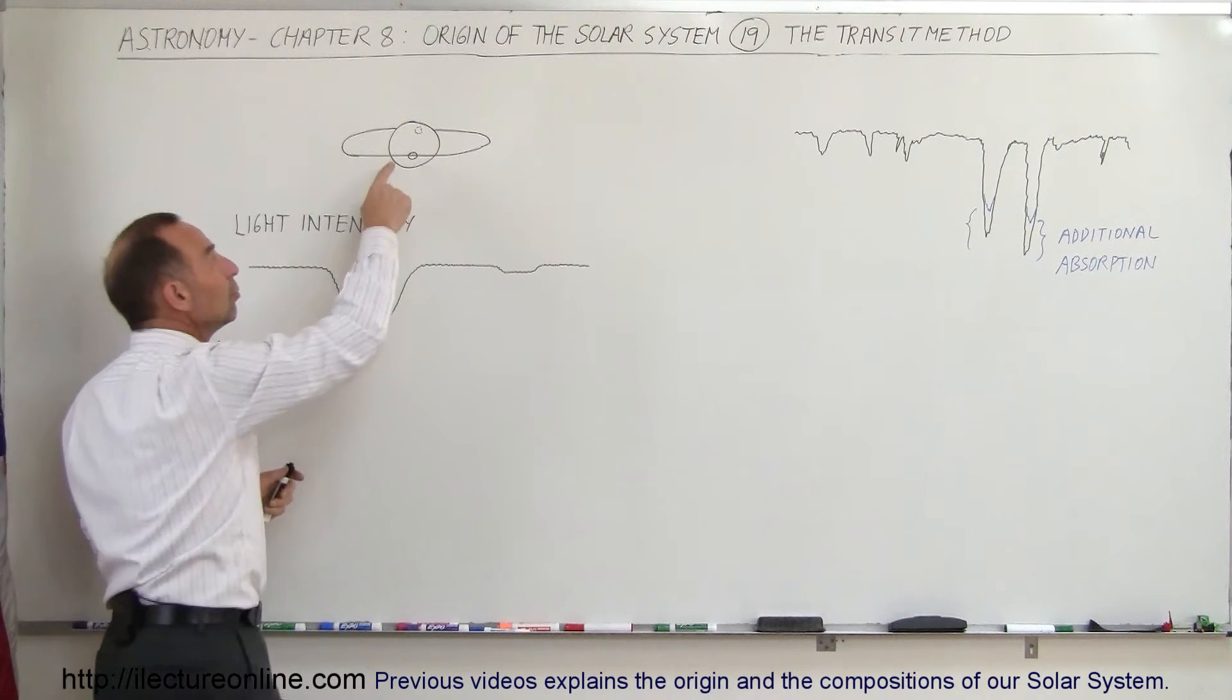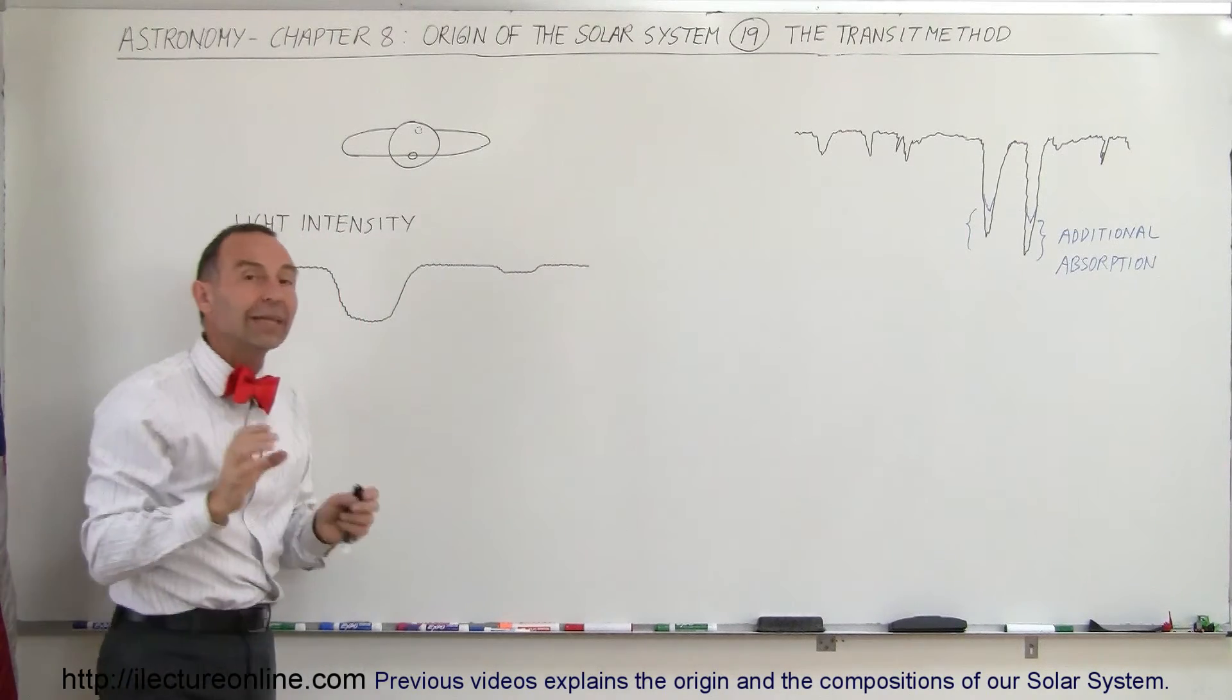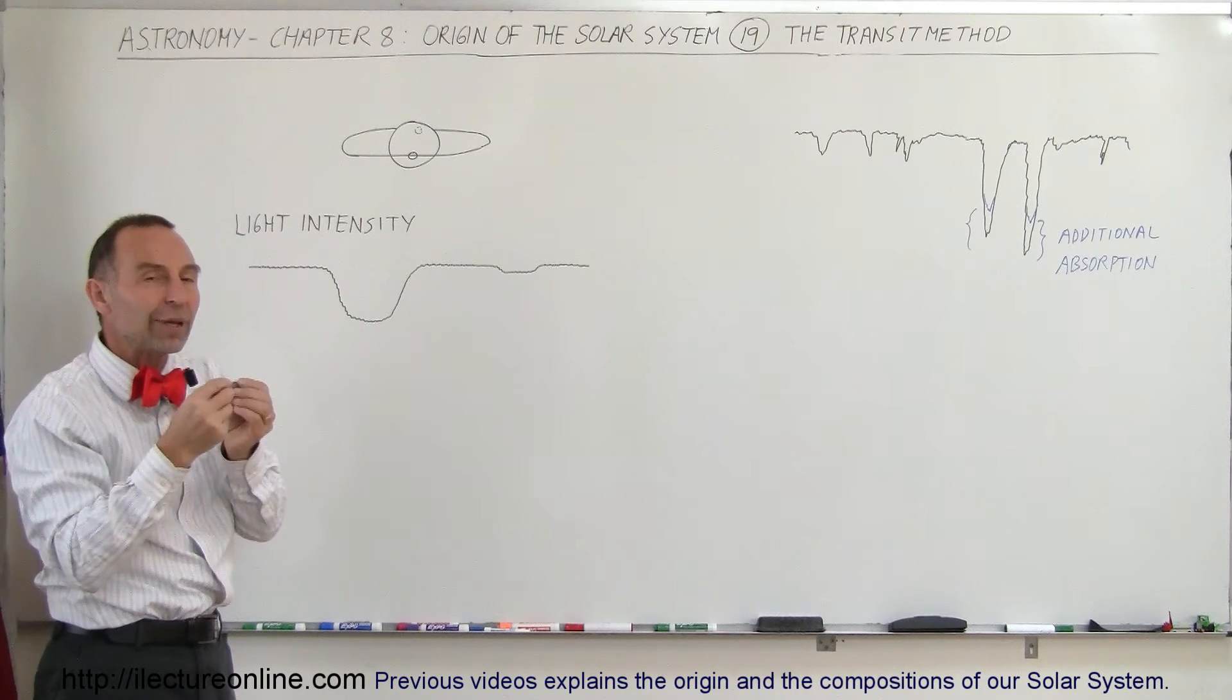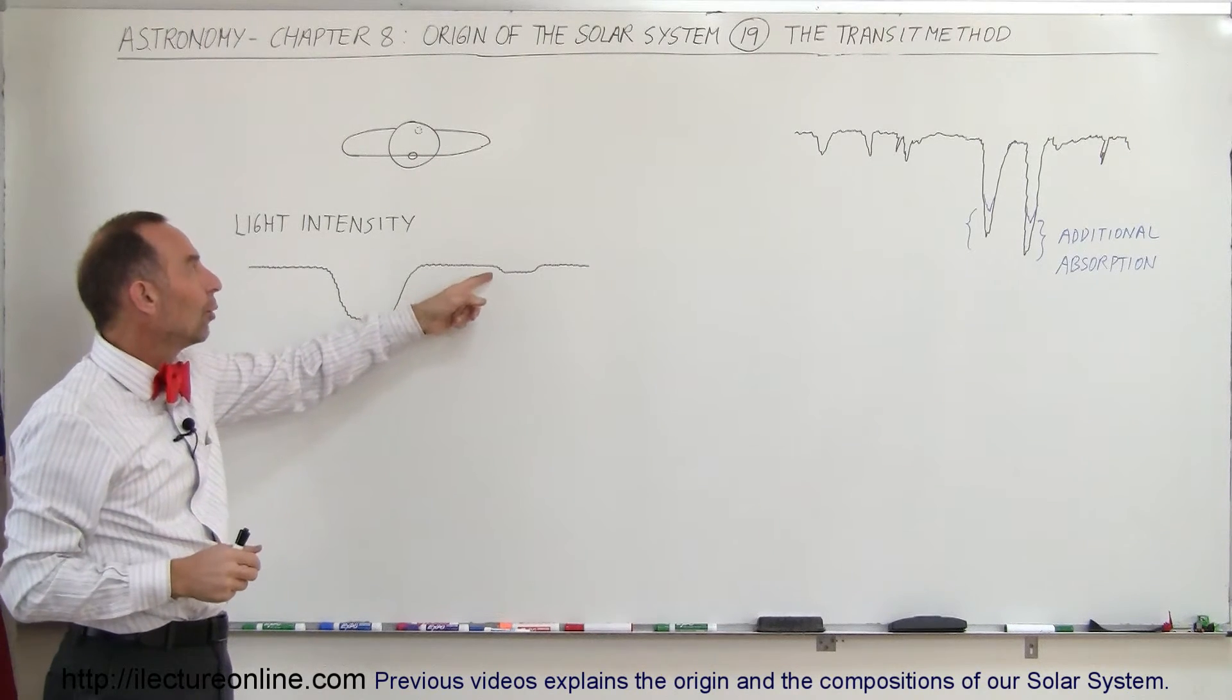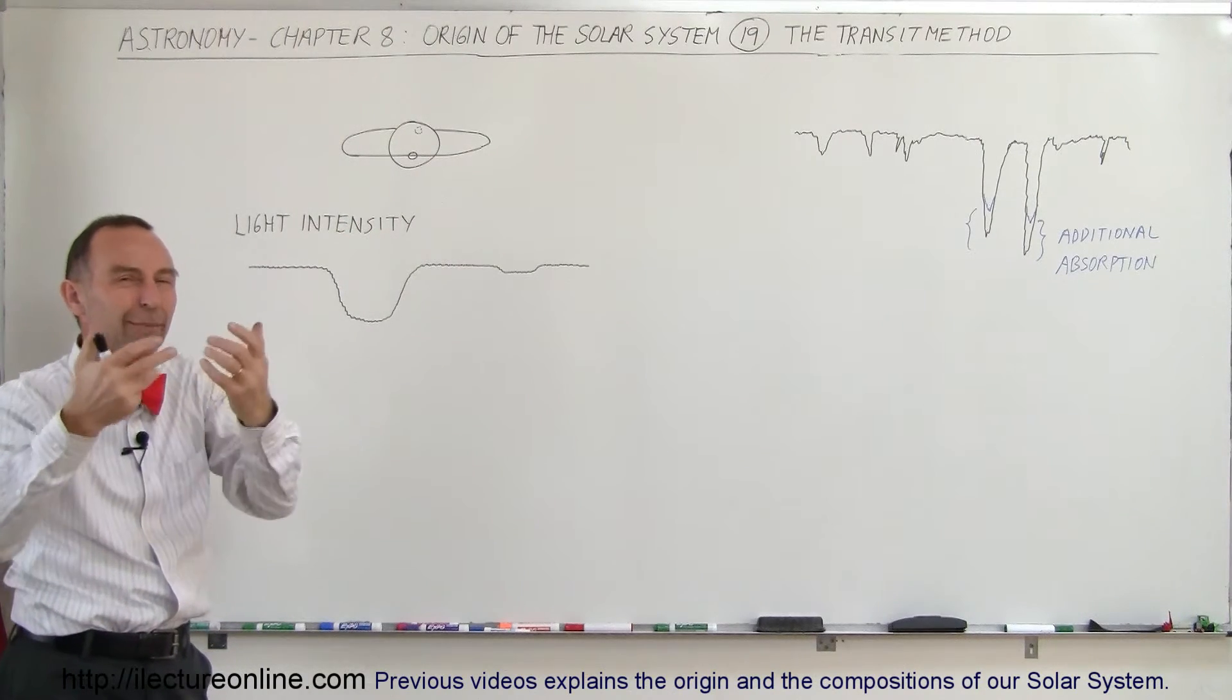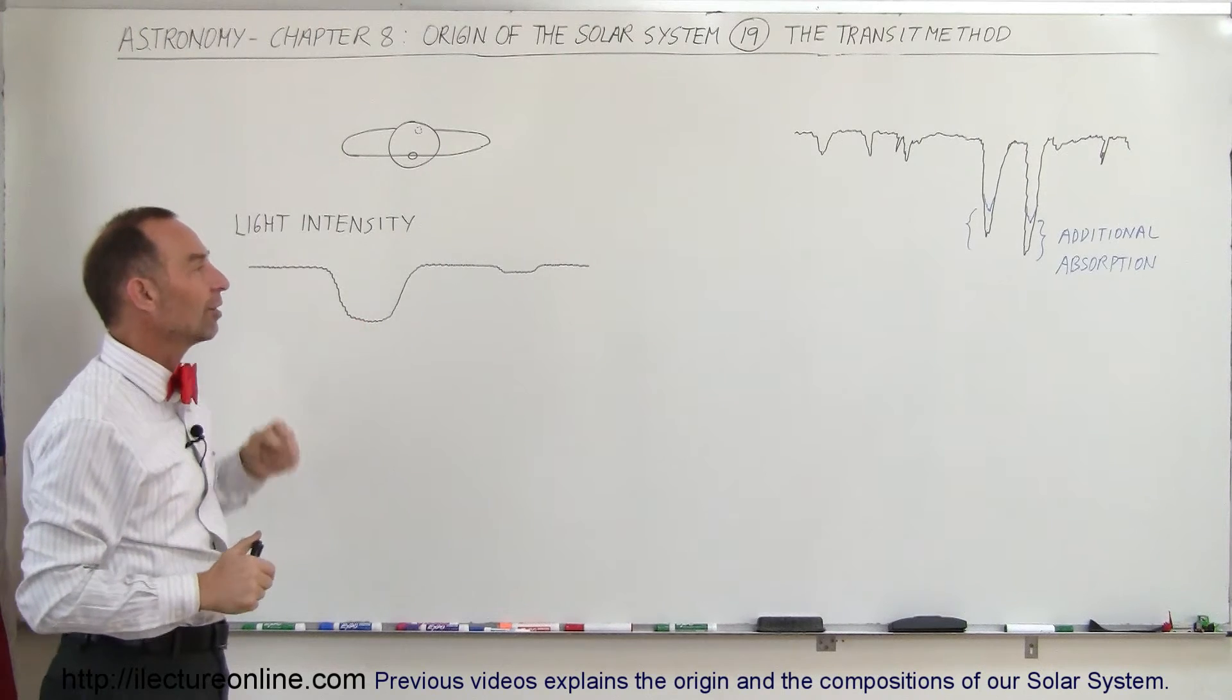Secondly, when the planet moves behind the disk of the Sun, we sometimes have a minuscule amount of dimming that is actually perceptible. We can see that because the planet does reflect some light. When the planet is over there versus behind the disk, we can see a small amount of dimming of light coming from that region. This is much more difficult to detect, of course, than this one right here.